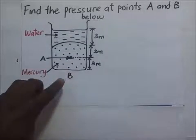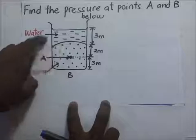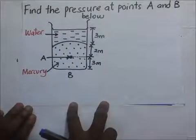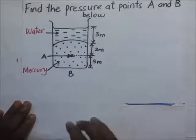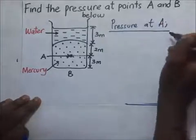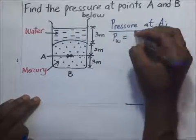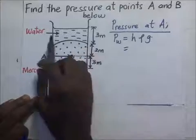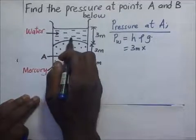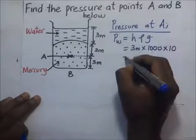Now we find the pressure at point A. We have two liquids — water and mercury — so we first find the pressure exerted by the water, then the pressure exerted by the mercury, and add them. The pressure exerted by water at point A is height × density × gravity. The height of the water column is 3 meters, so: 3 m × 1000 kg/m³ × 10.